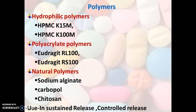Polymers are a special category including hydrophilic polymers, polyacrylate polymers, and natural polymers. Examples of hydrophilic polymers are HPMC; polyacrylate polymers include Eudragit; and natural polymers include sodium alginate, carbopol, and chitosan. These are widely used for sustained release and controlled release formulations where modification of drug release is desired.